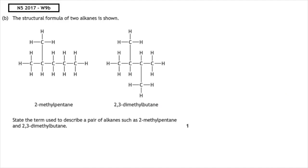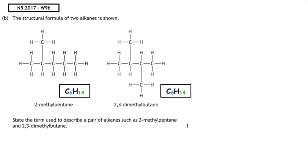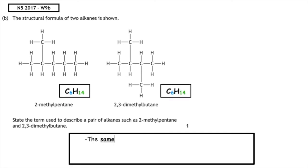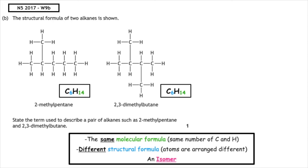This past paper question is from the National 5 2017 written, question 9b. The structural formulae for two alkanes are shown: 2-methylpentane and 2,3-dimethylbutane. The term used to describe a pair of alkanes such as these is what? They have the same molecular formula - both have 6 carbons and 14 hydrogens - but a different structural formula. So the term used to describe that is an isomer.